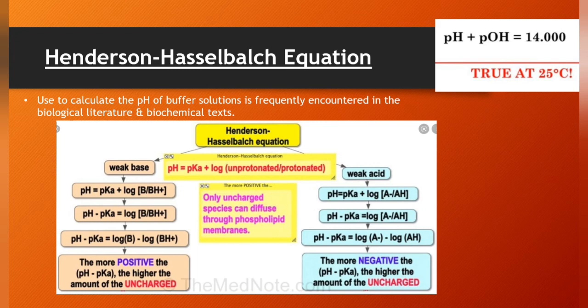In weak acids, pH equals pKa plus log A- divided by AH. pH minus pKa equals log A- divided by AH. pH minus pKa equals log A- minus log AH. The more negative the pH minus pKa, the higher amount of the uncharged. pH plus pOH equals 14.00 at 25°C.